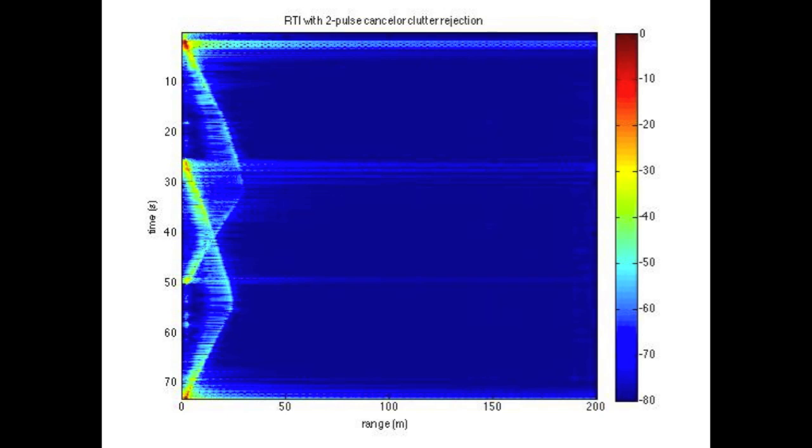This is our ranging results by having two people walk in front of the radar at different times. The x-axis represents the range in meters while the y-axis represents the time. The color change represents intensity. As you can see, the first person walked 30 meters away from the radar before walking back towards the radar while the second person started walking away before the first person got back.